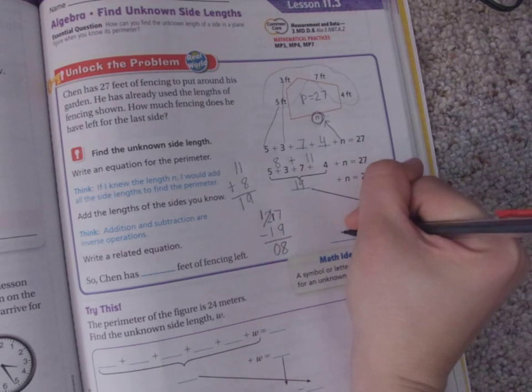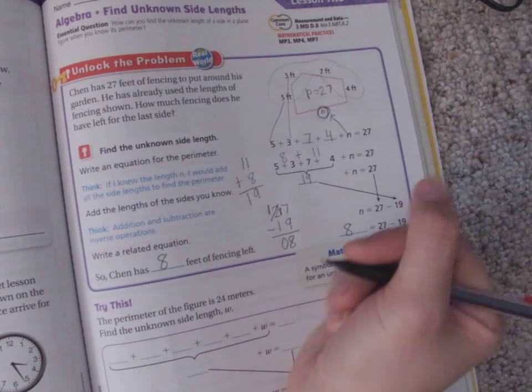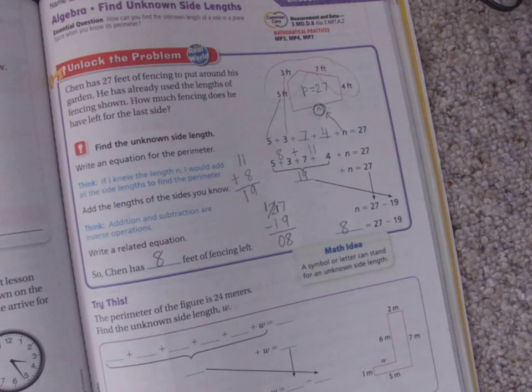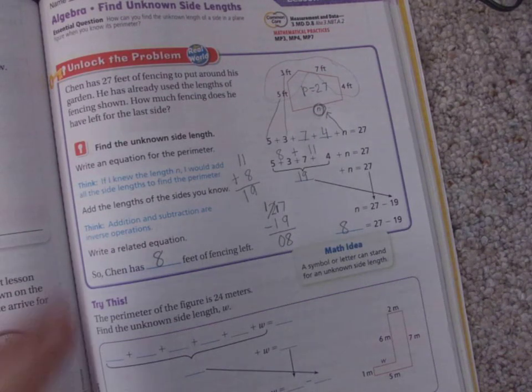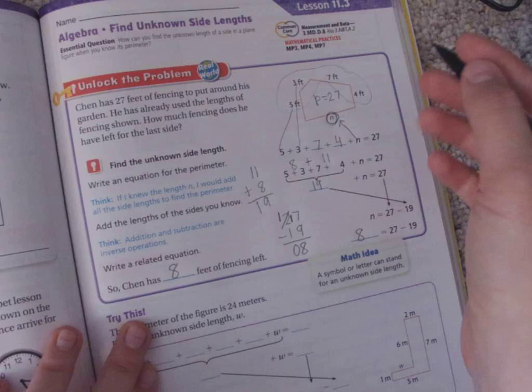So n equals 8. So he has 8 feet of fencing left. So a way I like to check this to see if I got my work right is by adding up all the numbers.